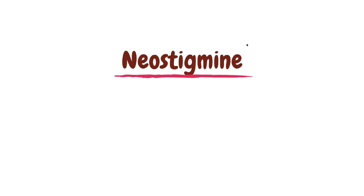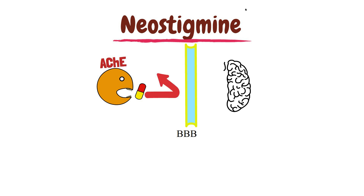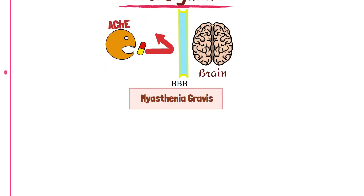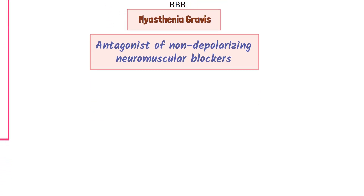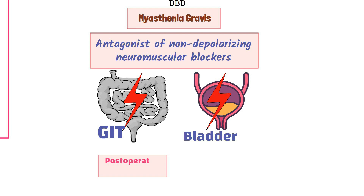After this, we have the drug neostigmine. Like physostigmine, it is also a reversible inhibitor of acetylcholinesterase. Neostigmine is a synthetic compound and cannot cross the blood-brain barrier to reach the brain. Therapeutically, it is used for myasthenia gravis, as an antagonist for non-depolarizing neuromuscular blockers, for stimulating the GI tract and urinary bladder, and for postoperative ileus and urinary retention.